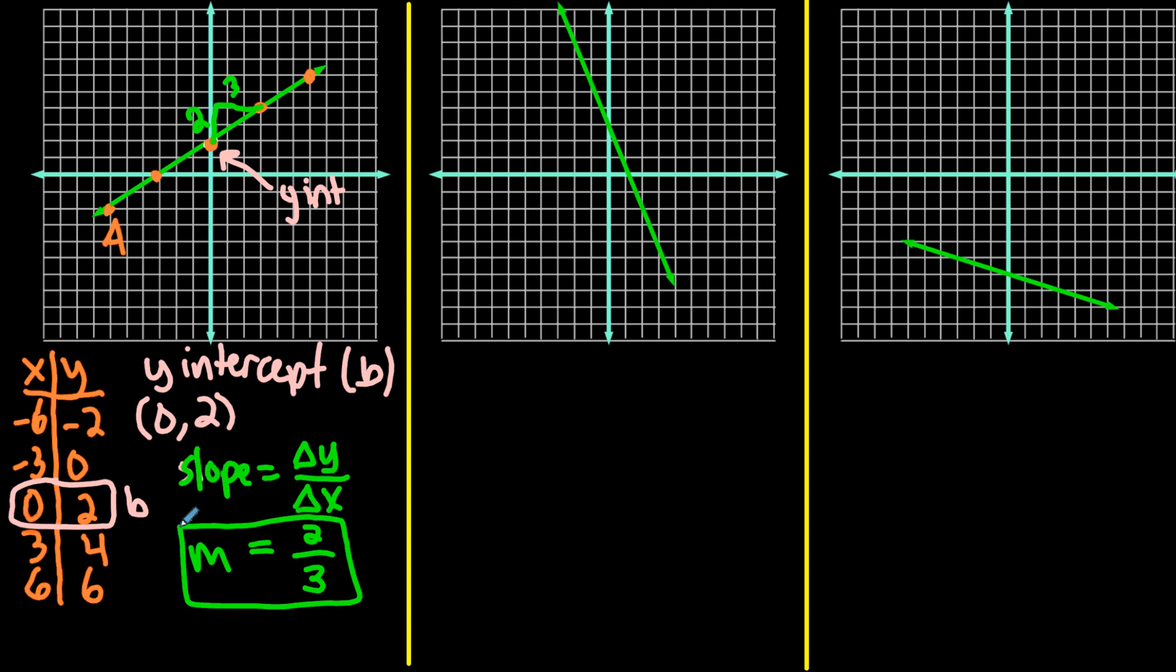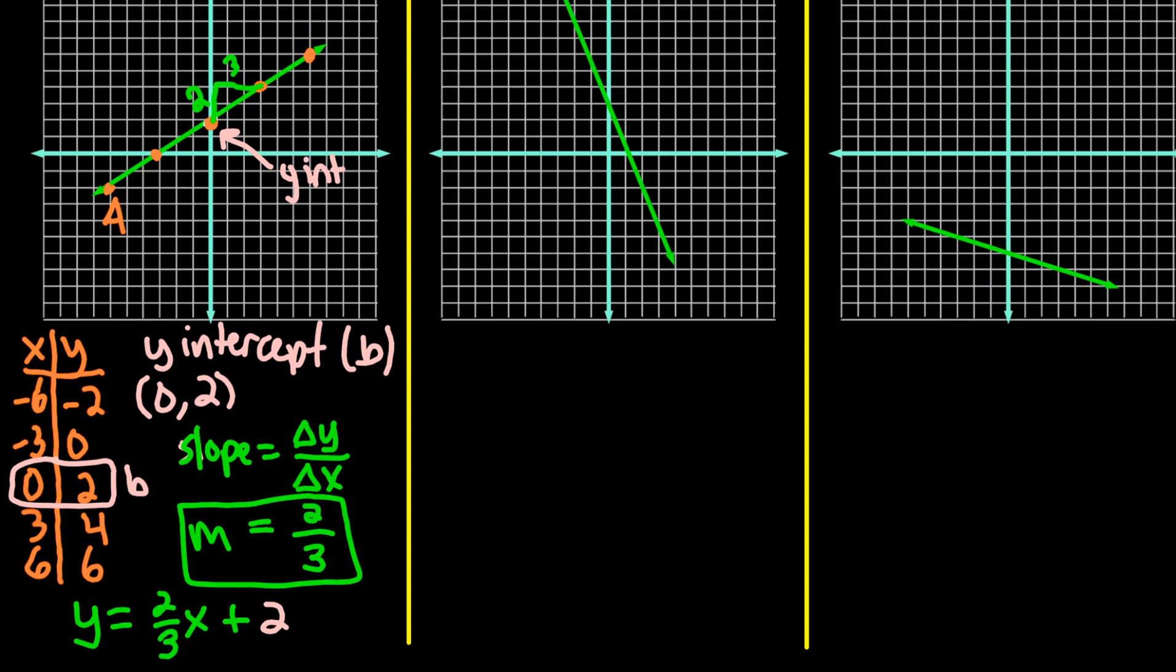So our equation for this is going to be y equals, and then you always write the slope, so 2 thirds x plus the y-intercept, which is 2. So the slope and y-intercept are always going to be in this form of the line. Again, usually we'll call it y equals mx plus b, where the m goes in front of the x, that's the slope, and then the plus b is the y-intercept.